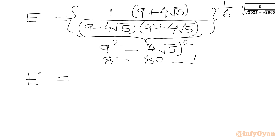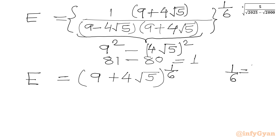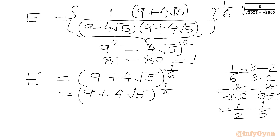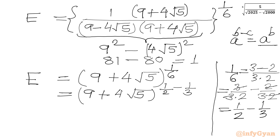We can write E equal to 9 plus 4 root 5, whole to the power 1 over 6. Now, 1 over 6 can be written as 1 over 2 minus 1 over 3, since 3 minus 2 equals 1 and 3 times 2 equals 6. So we write 9 plus 4 root 5 to the power 1 over 2 minus 1 over 3. Using the exponent property a to the power b minus c equals a to the b over a to the c: